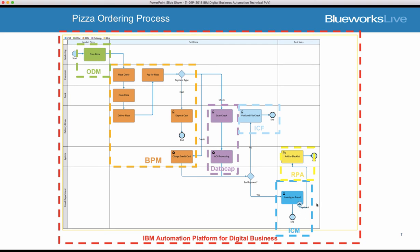If the case manager determines that this is in fact fraud, they may want to kick off an activity that copies the data from the ICM system over to a spreadsheet as a blacklist of customers who have passed off fraudulent checks. I could use Robotic Process Automation for that copying. Certainly spreadsheet APIs could do it, but that's often more complicated than just using RPA for that data transfer.